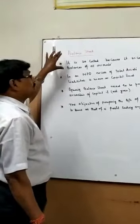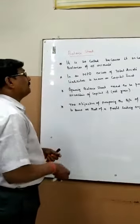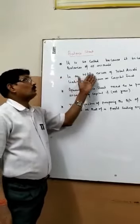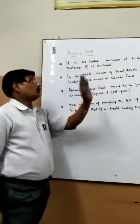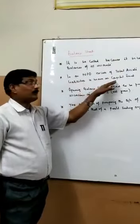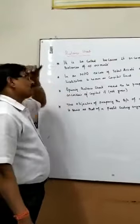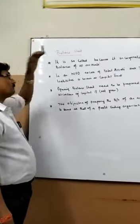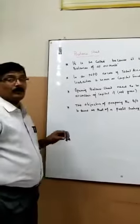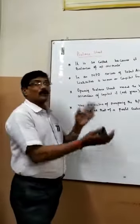The balance sheet is called as such because it incorporates the balances of all accounts. In an NPO, the excess of total assets over total liabilities is known as capital fund. But in the case of trading concerns, we call it capital. In the case of an NPO, the excess of total assets over total liabilities is known as capital fund.